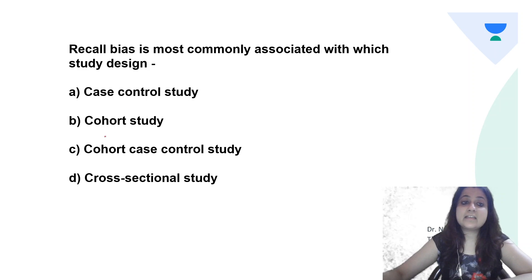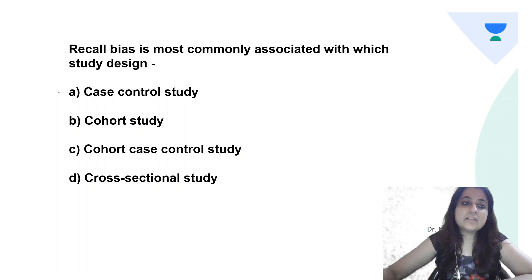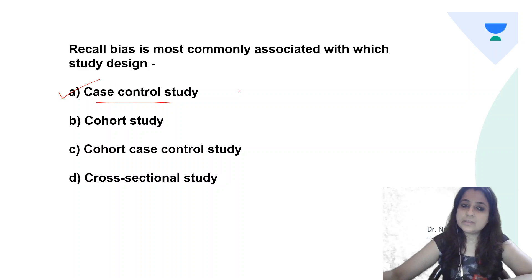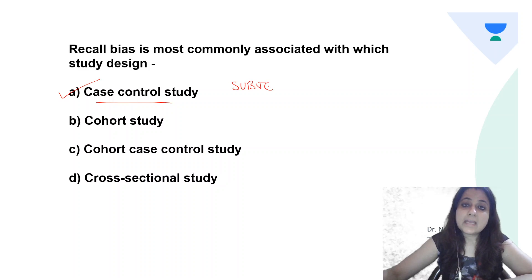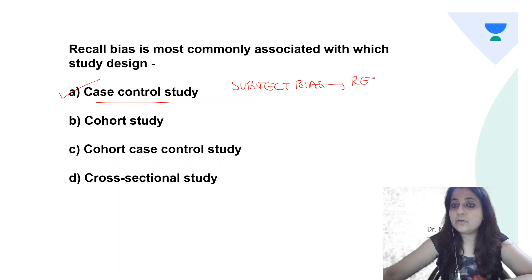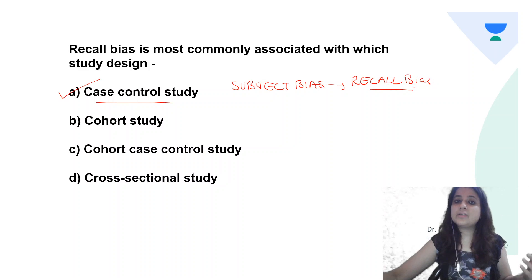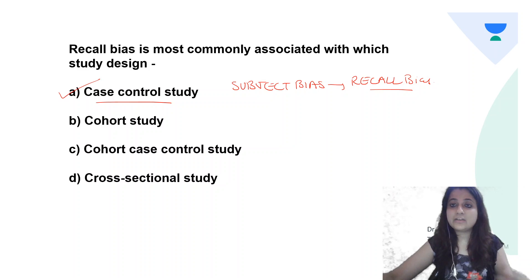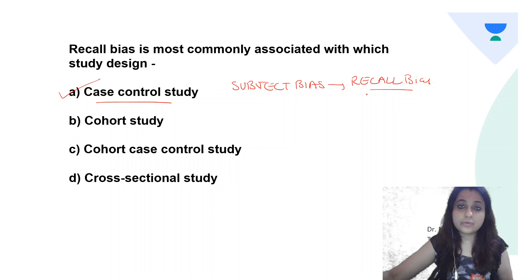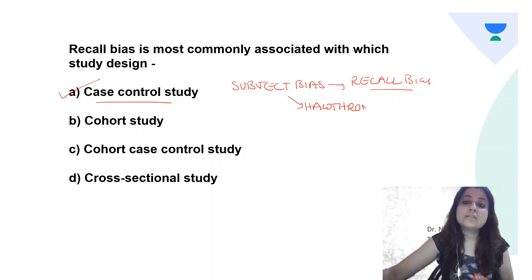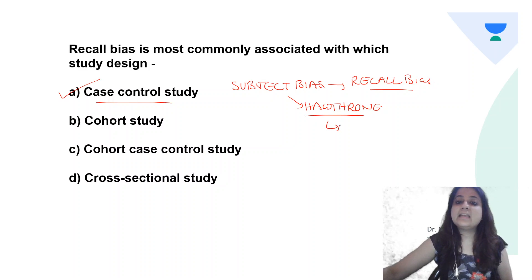The answer is: recall bias is most commonly seen with the case control study design. Recall bias is a type of subject bias. Subject bias has two types — one is recall bias, seen in case control study design, where cases are going to remember every little intricate detail of what led to the outcome, but controls will not.